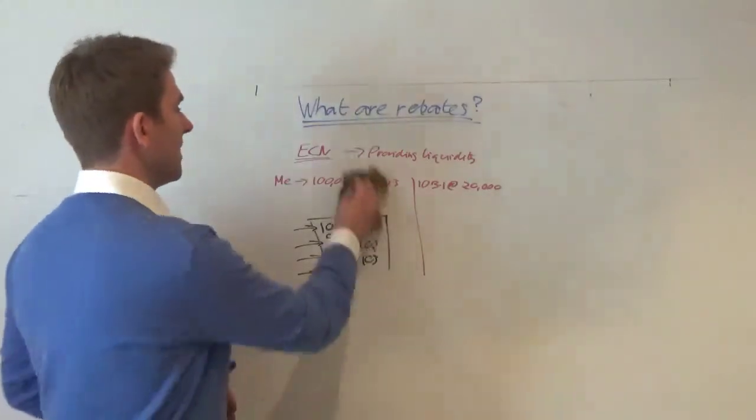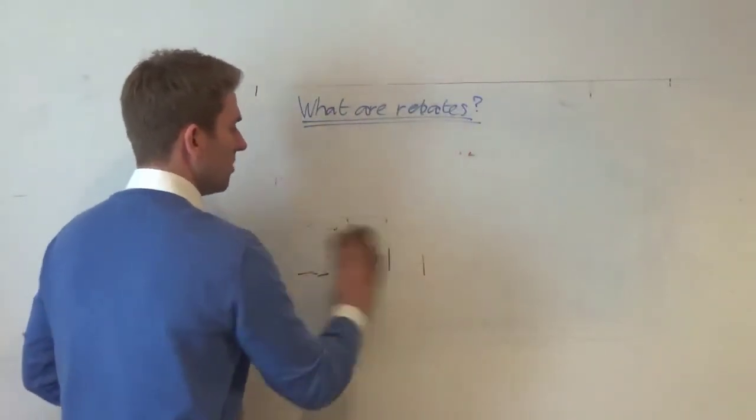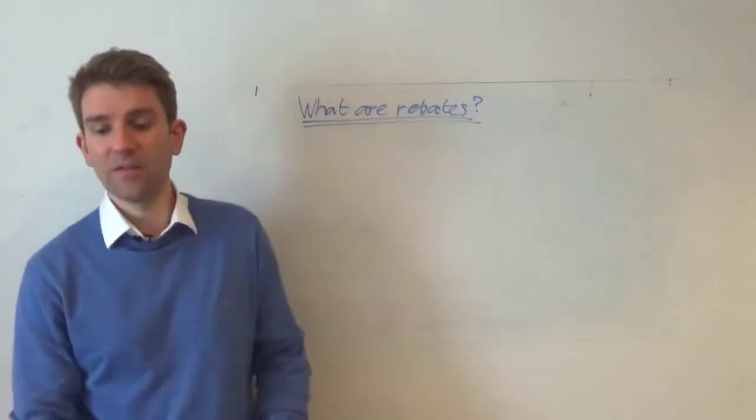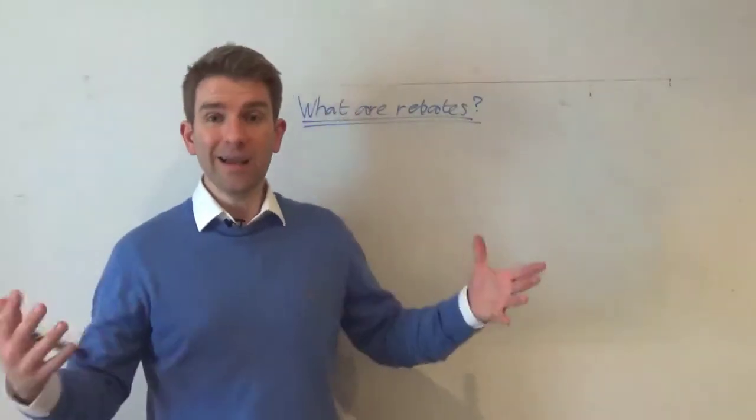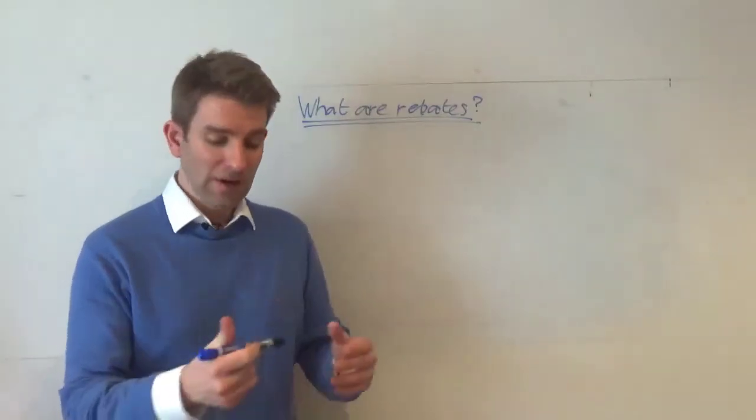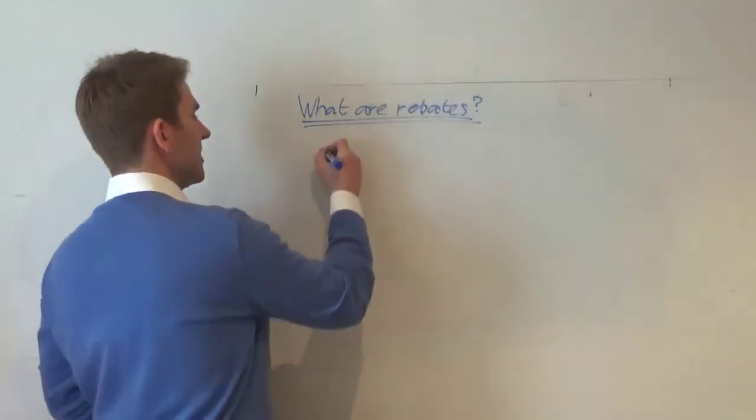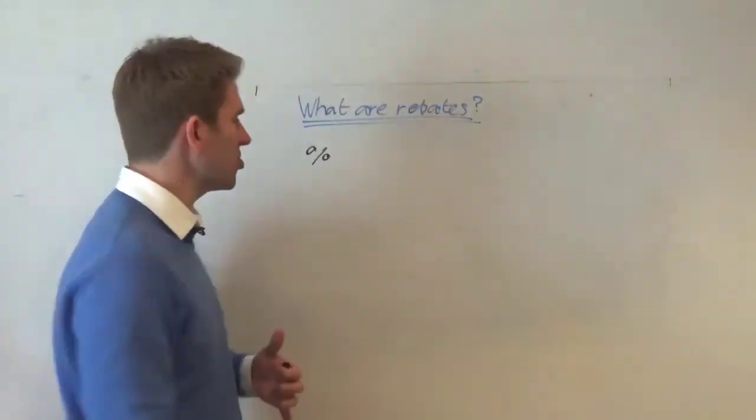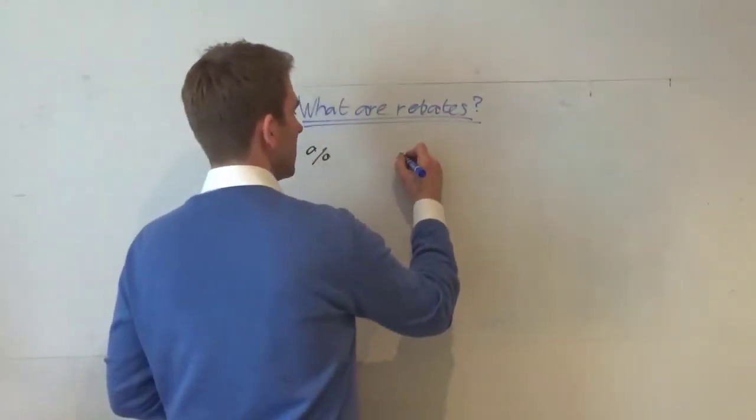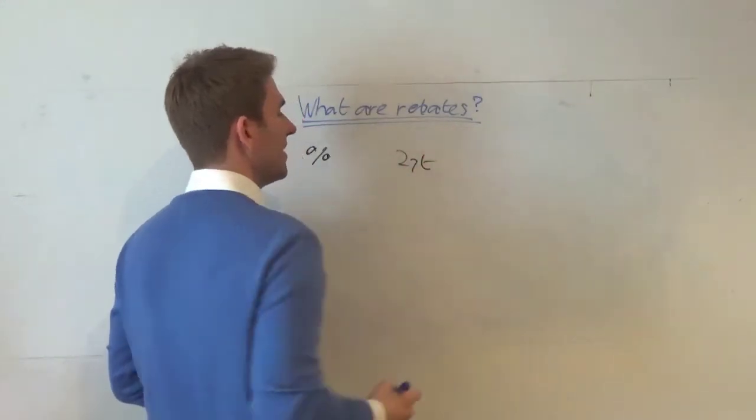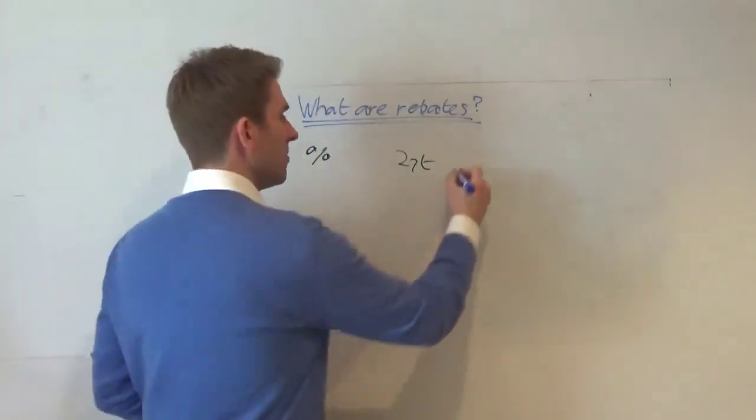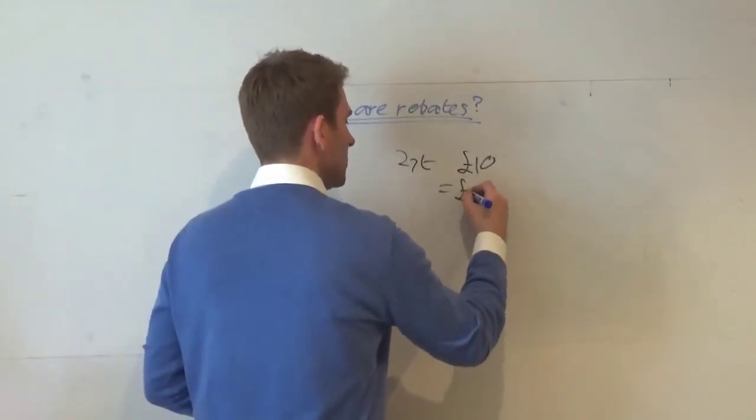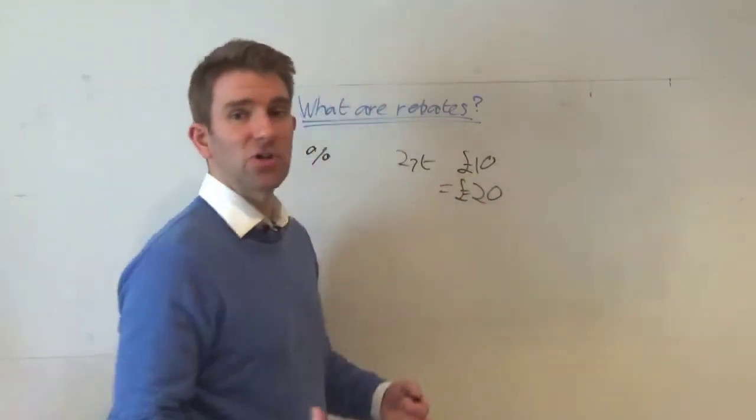Now, the other side of rebates is the rebates that maybe you're more familiar with if you're trading Forex or if you're trading indices or if you're trading anything like that. If you're trading through a platform like InterTrader, for example, they will give you a percentage back of your spread based on how much volume you do. So in a nutshell, let's say you're trading something that has a two-point spread and you're trading £10 a point, and we're talking spread betting here. Obviously, it's different for CFD.